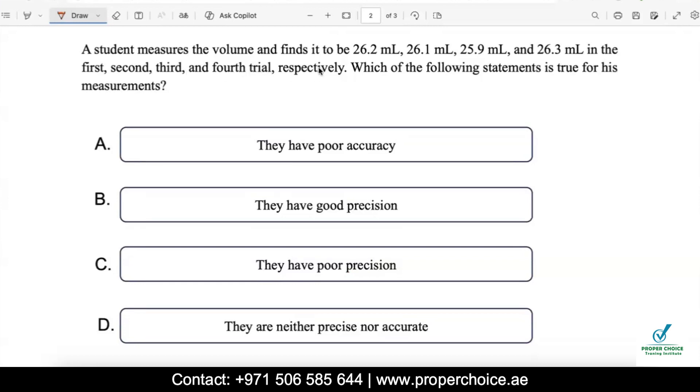A student measures the volume and finds it to be 26.2 milliliters, 26.1 milliliters, 25.9 milliliters, and 26.3 milliliters in the first, second, third, and fourth trial respectively. Which of the following statement is true for this measurement? They're asking us, whatever the data has been given to us regarding this, which statement is true? Option A says they have poor accuracy. Option B says they have good precision. Option C says they have poor precision. Option D is they are neither precise nor accurate. Now to answer this question you should be knowing the difference between accuracy and precision.